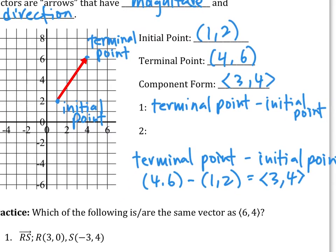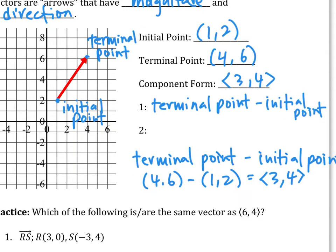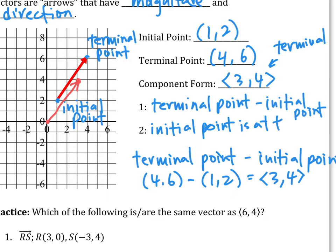What does component form ⟨3, 4⟩ mean? The point (3, 4) is not a vector by itself because a vector needs magnitude and direction. But ⟨3, 4⟩ means the vector is pointing from the origin to that point. So in component form, the terminal point is at (3, 4) and the initial point is at the origin.